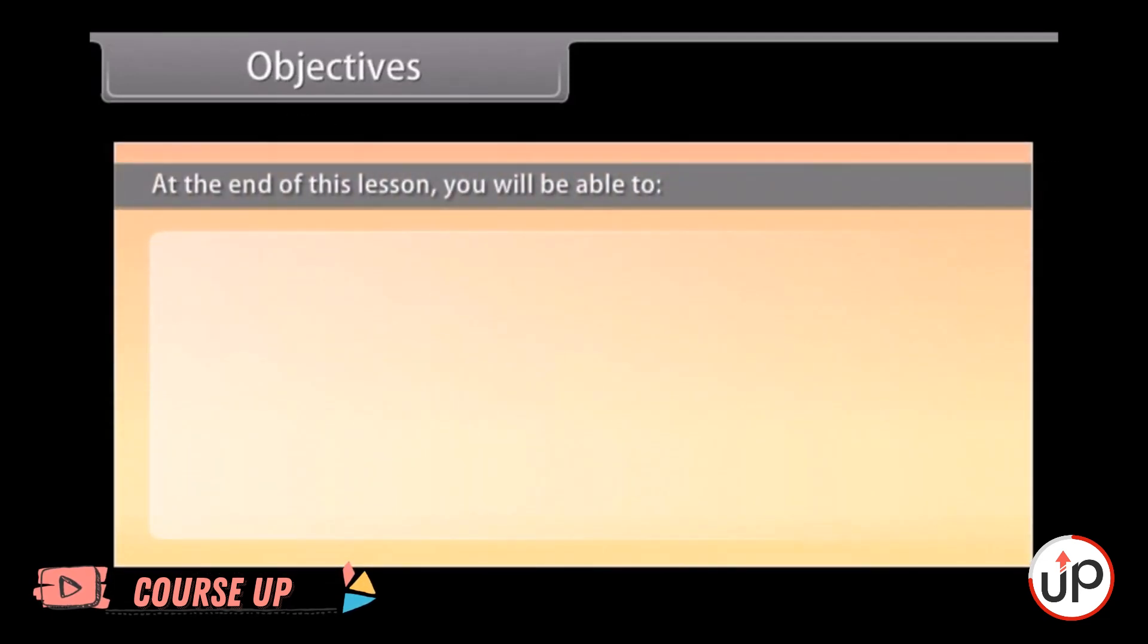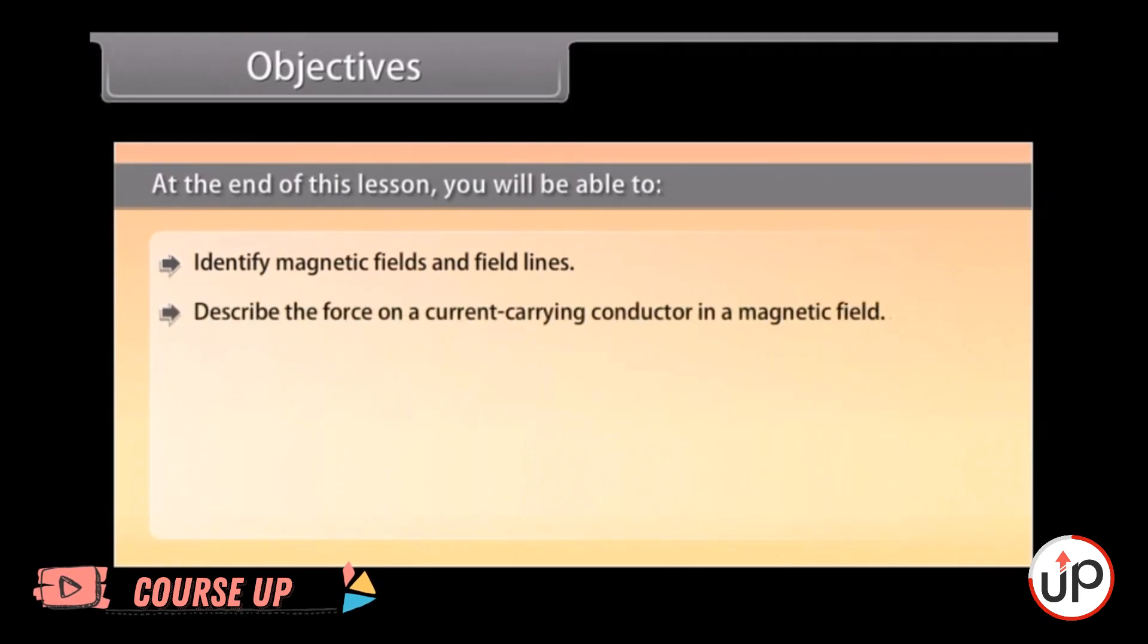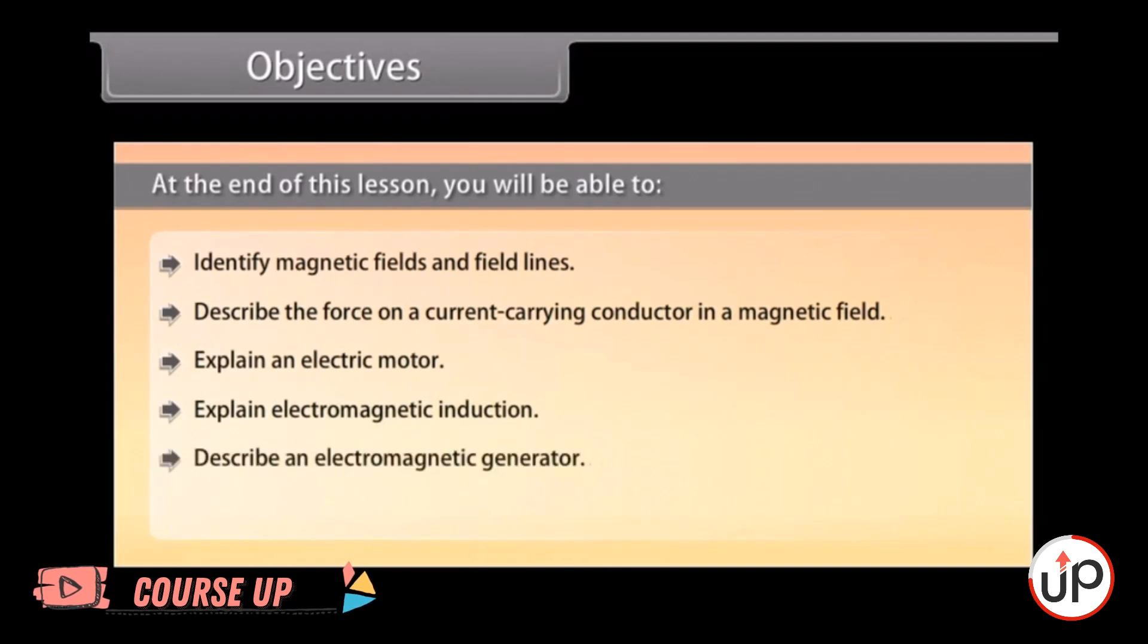Objectives. At the end of this lesson, you will be able to identify magnetic fields and field lines, describe the force on a current carrying conductor in a magnetic field, explain an electric motor, explain electromagnetic induction, describe an electromagnetic generator, and identify domestic electric circuits.